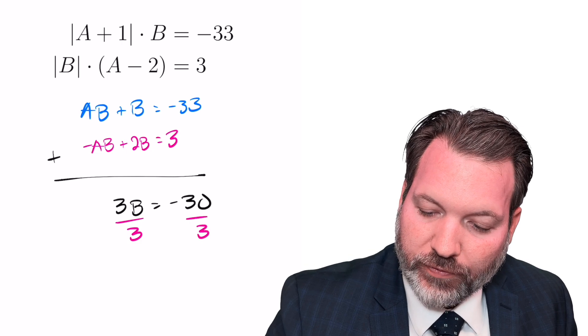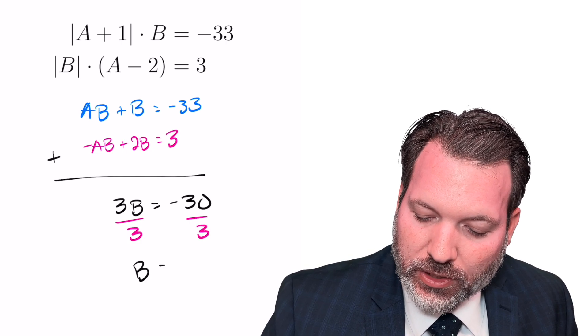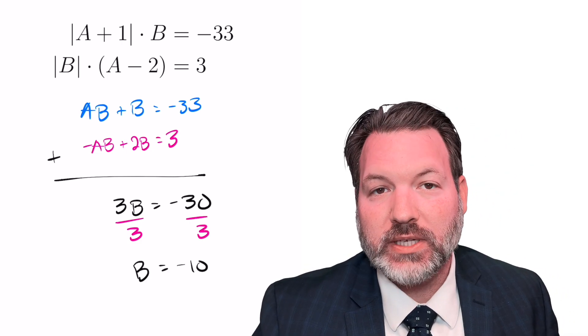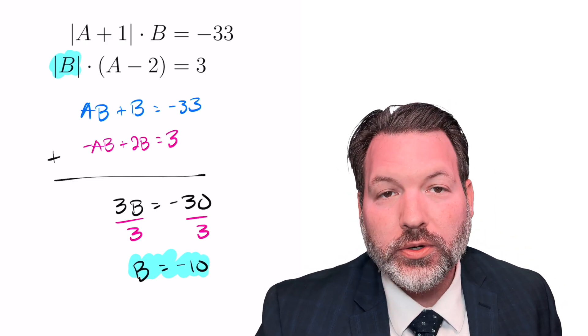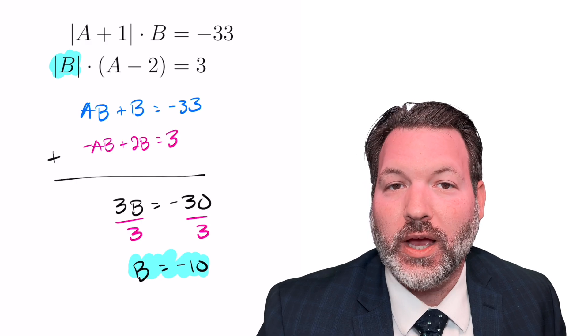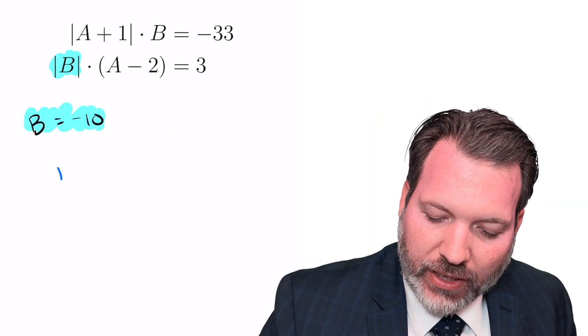From here, we can divide by 3, and that lets us know b must be negative 10. And now all we have to do is take that information back to one of our two original equations, plug it in, and solve for the other variable.